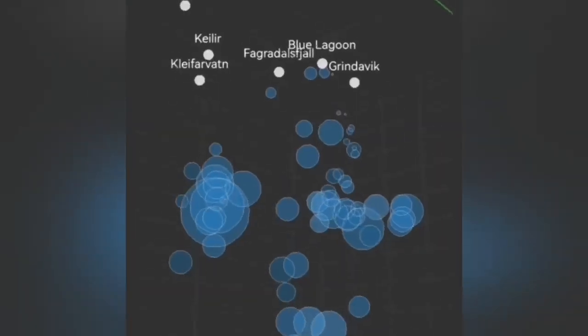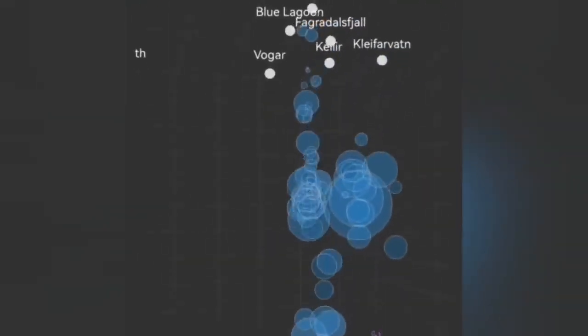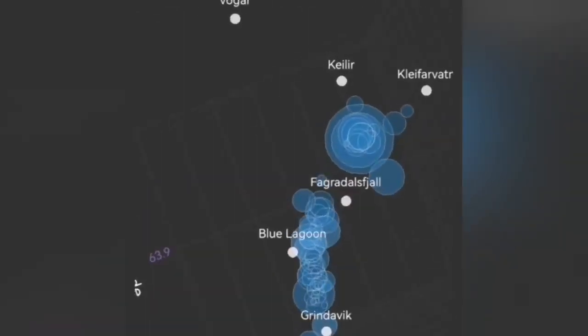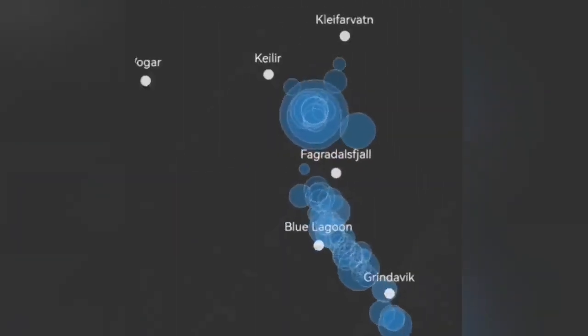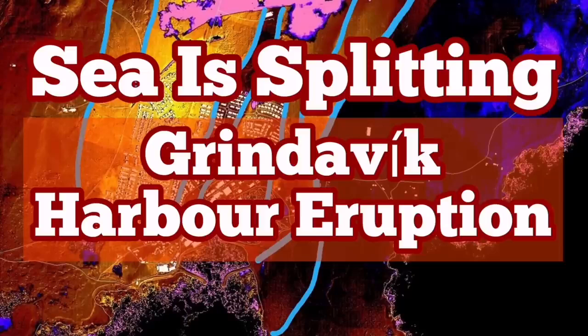I show you here what is related to the Krýsuvík volcanic system and Grindavík. Near Svartsengi we don't have much, Sundhnúkar has something, and now off the coast of Grindavík in the ocean, we see rising earthquakes, which means the magma is rising with it.